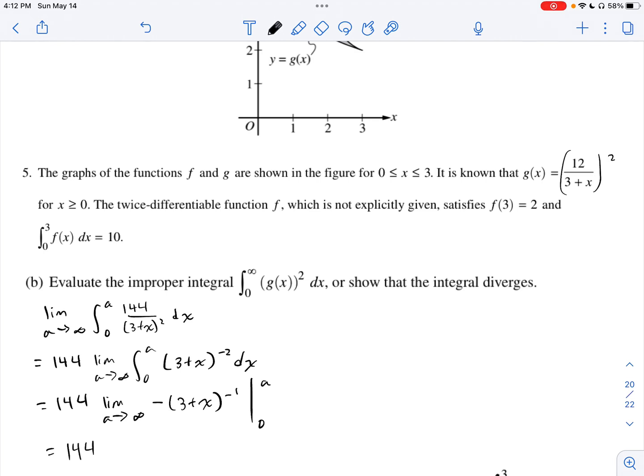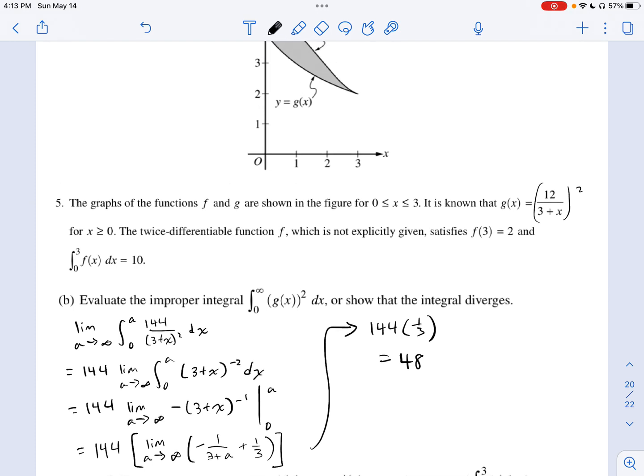So 144 times the limit. Just using the power rule there, we can see that this would be negative (3 + x) to the negative 1 power, and we're evaluating all of that from 0 to a. I'm going to put my limit statement actually inside its own bracket. So the limit as a approaches infinity, we've got negative 1 over 3 + a. And if I evaluate that integral again with 0 plugged in for x, that's just going to be plus 1/3. The limit as a approaches infinity, we're going to use the limit at infinity theorem to say all of this has to go towards 0. So as our denominator grows without bound, that quotient is going to be equal to 0. And then we just have 1/3. So this is just going to be 144 times 1/3, and that is equal to 48. So our improper integral does indeed exist. We can integrate it, and it turns out that it is equal to 48.